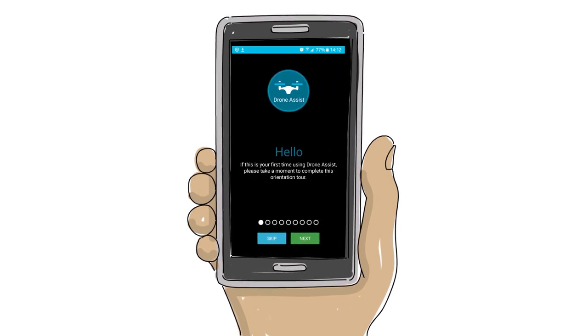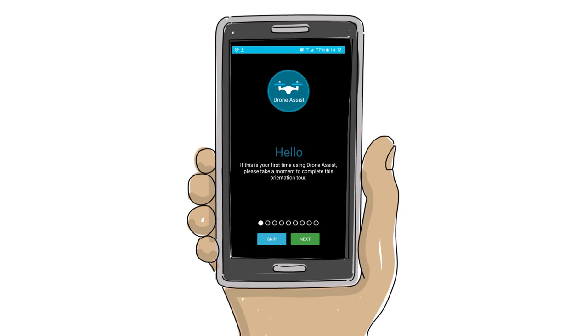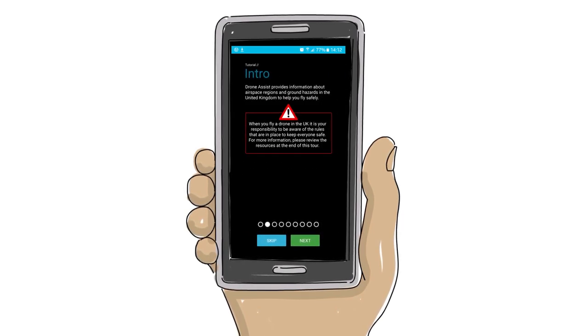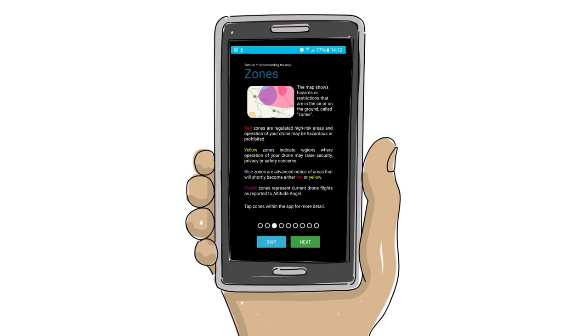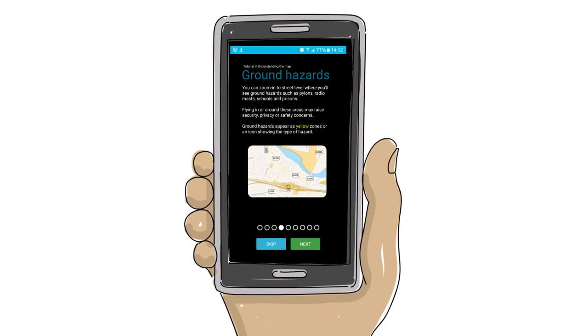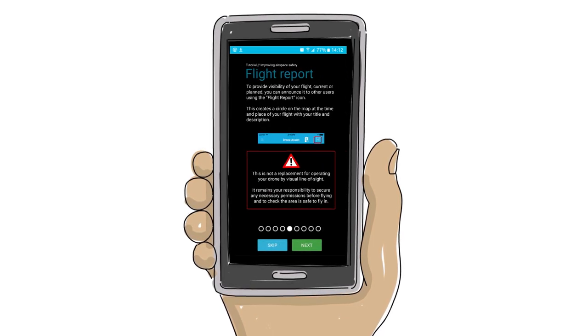DroneAssist presents you with an interactive map of airspace used by commercial air traffic and military aircraft, so that you can see areas to avoid or areas where extreme caution should be exercised, as well as ground hazards that might pose safety, security, or privacy risks when you're flying your drone.